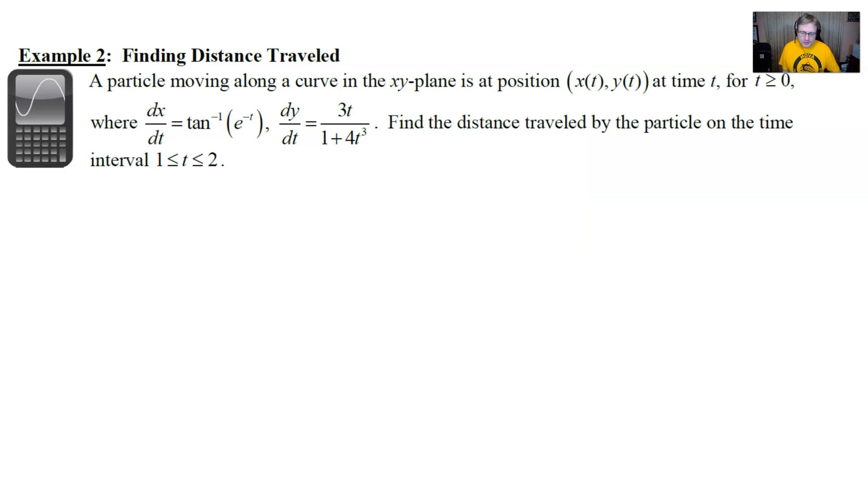So what does our example two look like? Well, we have a particle traveling along a curve in the xy plane. No surprise there. It's got a position of x(t), y(t) at any time t, as long as t is positive or zero. We're told that dx/dt is the inverse tangent of e to the negative t, while dy/dt is 3t all over 1 plus 4t cubed. Find the distance traveled by the particle on the time interval 1 to 2.